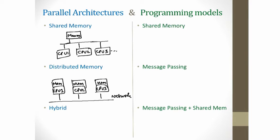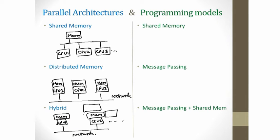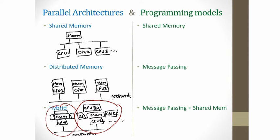Finally, what we see in real life is neither the shared memory nor the distributed memory system, but a hybrid of the two. Typically you have different nodes connected together by a network, and each node has multiple CPUs sitting on it — CPU 2A, CPU 2B and so on. Locally on each node it is a shared memory architecture, but across nodes these two nodes are connected together using a network — that is the distributed memory part. So this is called a hybrid system.